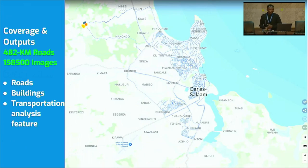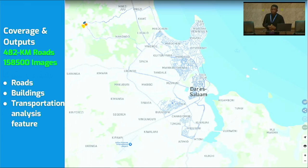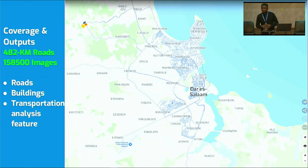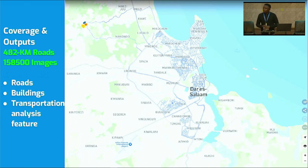From our mapping exercise, we have managed to cover 482 kilometres of roads and capture 158,500 images. From this we are able to get road condition, road size, and other traffic signs.